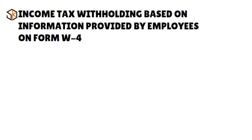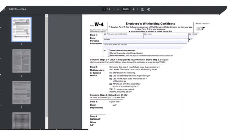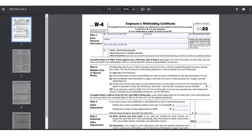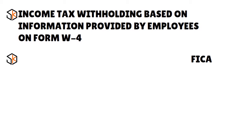Let's define employment taxes. Employment taxes are federal and state taxes related to employees' taxable income. These taxes include income tax withholding based on information provided by employees on Form W-4 — a form given to employees when they join the company. This tax is paid exclusively by employees, and employees can update their W-4 at any time during the year.